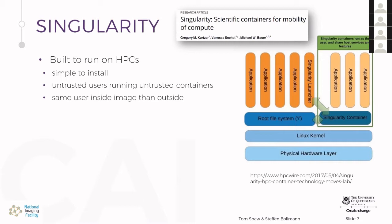To get around these problems, Singularity was built — think of it as Docker for scientists. Singularity is backed by a company called Sylabs, which sells products around containerization but also provides open source software. If you need support — for example, if you're an HPC centre — you can pay for it, which helps fund open source development. There's also a paper about it if you're interested in the technical details. Singularity is built to run on high-performance computing systems and is simple to install from an admin perspective.